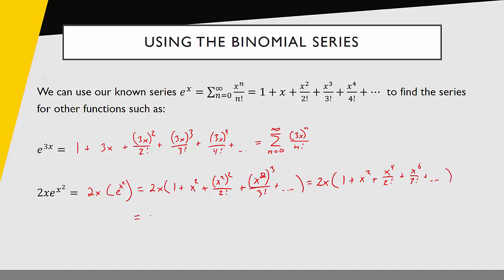Lastly I'll just multiply through everything by 2x to get 2x plus 2x cubed plus 2x to the fifth power over 2 factorial, 2x to the seventh power over 3 factorial. From here I can really see my pattern developing.